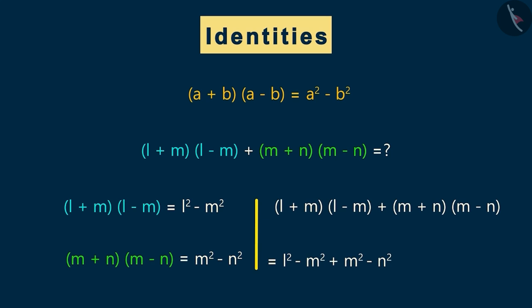We can say that minus m square and plus m square will cancel each other. So, we will get this as the final answer.